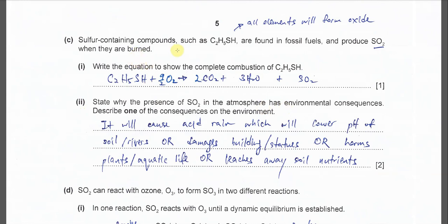Part C: Sulfur containing compounds such as C2H5SH found in the fossil fuel produce SO2 when they burn. Write an equation to show complete combustion of this compound. Very easy. When an organic compound is burned, it's always from oxide. Carbon will form carbon dioxide, hydrogen will form water, and sulfur will form SO2, not SO3. It's SO2 without catalyst. Therefore you just balance the equation. This compound with oxygen forms CO2, H2O and SO2.